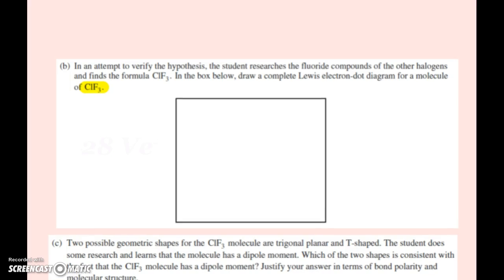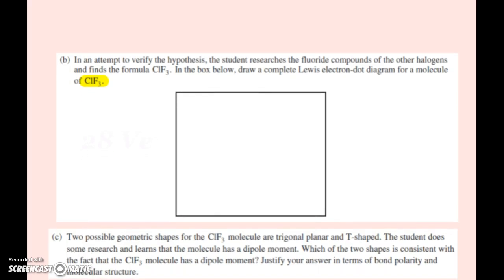Now in an attempt to verify this hypothesis, the student researches and finds out that there is a CLF3 molecule. In this box we want to draw the complete Lewis electron dot diagram. Drawing dashes for bonds should be totally acceptable. So the molecule is CLF3. First, how many valence electrons?